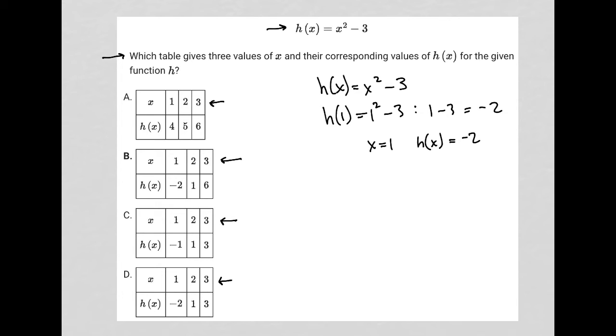Now I'm going to test that. So for choice A, I have 1 and 4, so that's wrong. For choice B, I have 1 and negative 2, so that looks good. For choice C, I have 1 and negative 1, so that's wrong. And choice D, I have 1 and negative 2, so that looks good. So just by plugging in x equals 1, I'm down to a 50-50 in terms of my answer.